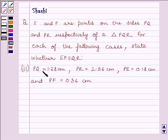PQ is equal to 1.28 cm, PR is equal to 2.56 cm, PE is equal to 0.18 cm and PF is equal to 0.36 cm.